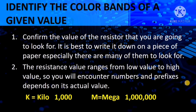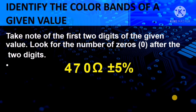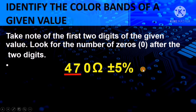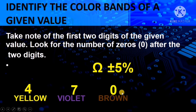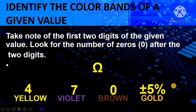You also need to take note of the first two digits of the given value. As an example, we have 470 ohms plus or minus 5%. The first two digits — 47 — will be our first and second color: 4 as yellow, 7 as violet. The remaining 0 means the multiplier color is brown, because brown represents 10 — one zero. And for plus or minus 5%, the color is gold. So for 470 ohms plus or minus 5%, the color combination is yellow, violet, brown, and gold.